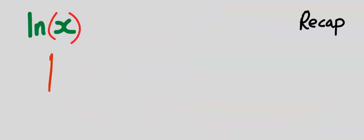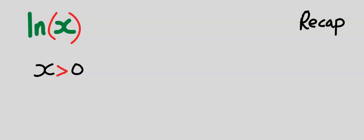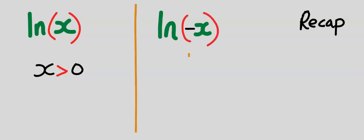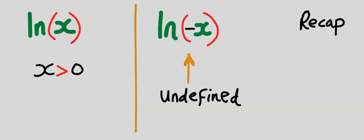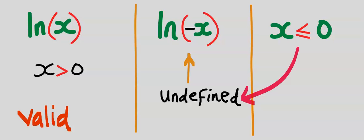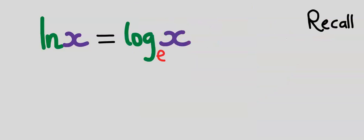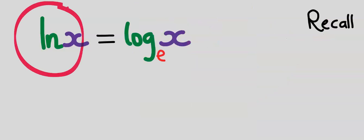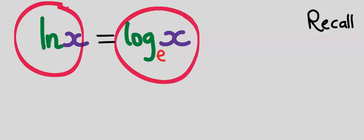For the natural log of x to be valid, x must be greater than zero. The natural log of a negative number is undefined — whenever x is less than or equal to zero, the natural log is undefined. Also recall that the natural log of x is the same as log x of base e.